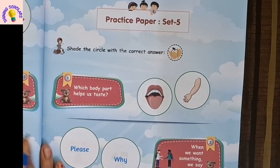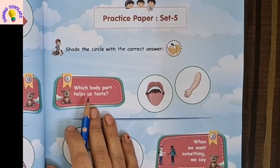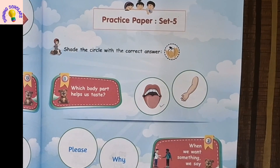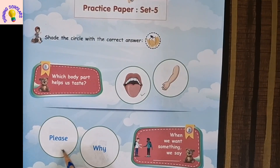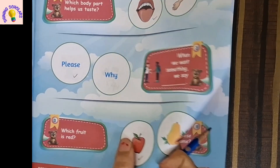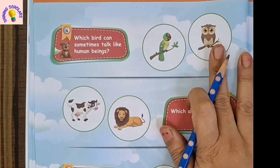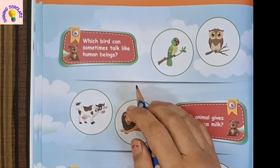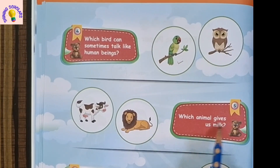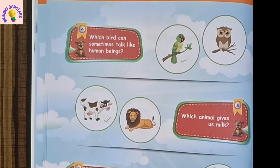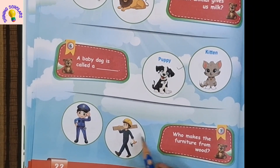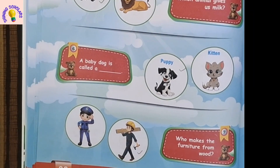Set 5. First question: which body part helps us taste? Tongue. When we want something, we say please. Which fruit is red — apple or papaya? Apple. Papaya is yellow in color. Which bird can sometimes talk like human beings? Parrot, not the owl. Which animal gives us milk? Cow. A baby dog is called a puppy. Who makes furniture from wood? It's the carpenter, not the policeman.